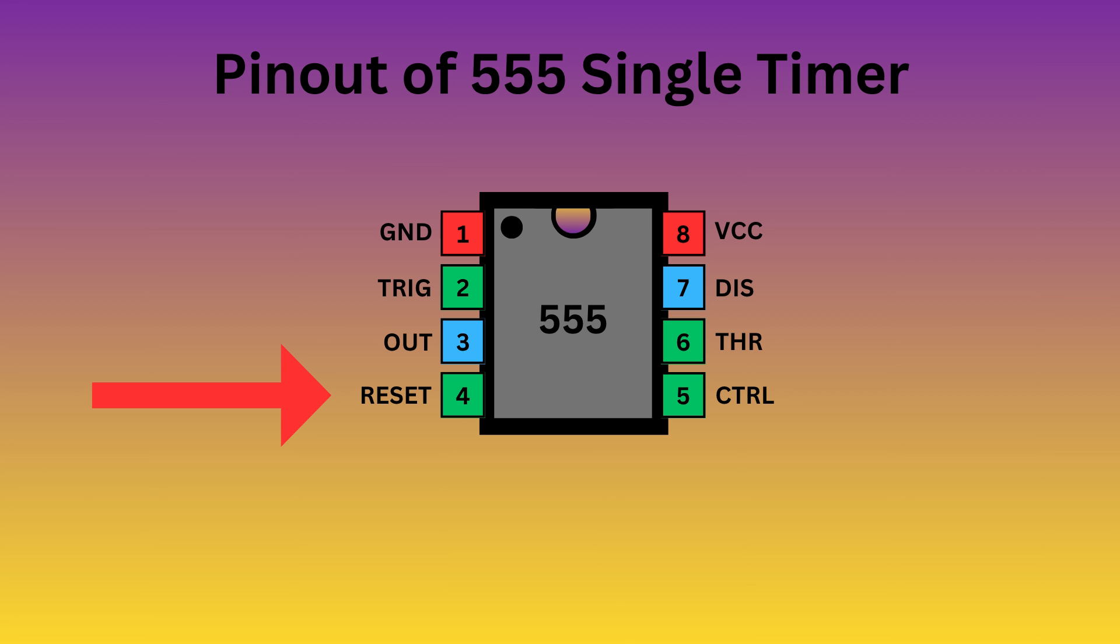Pin 4 is reset. It is used to reset the 555 timer's internal flip-flop. Pin 5 is control. It allows you to control the threshold voltage levels that the internal comparators use to set and reset the flip-flop. Pin 6 is threshold. It monitors the voltage of the capacitor connected to the circuit.